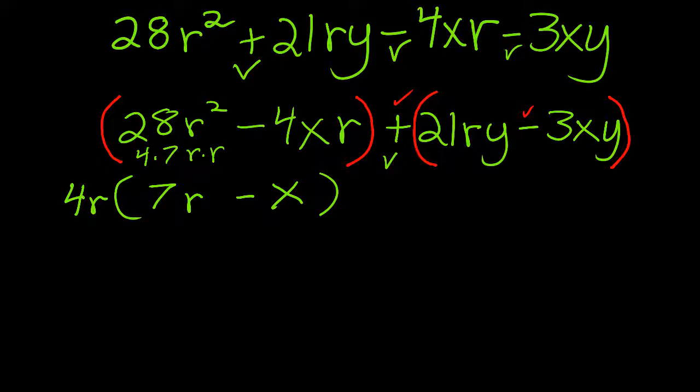Because 4r times x is 4xr. I would have said 4rx. All right, now I'll copy the plus sign down, and I will proceed to factor the second set of parentheses, the terms in the second set of parentheses, by GCF.